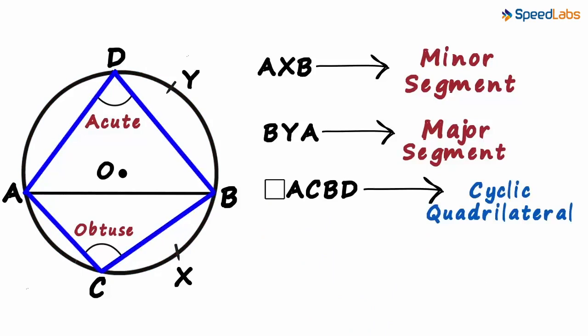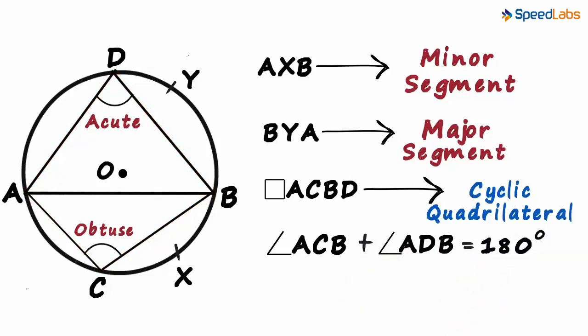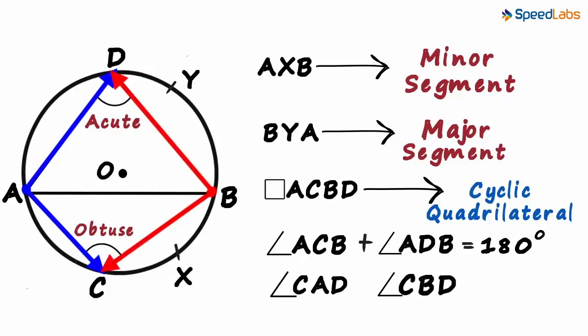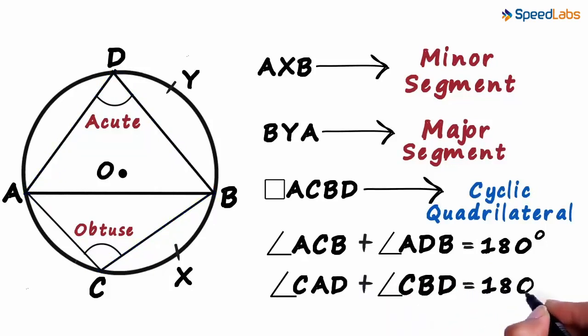And these quadrilaterals have a special property which says that the opposite angles are always supplementary, which means they add up to 180 degrees. Angle ACB and angle ADB are opposite angles, so they add up to 180 degrees. Similarly, angle CAD and angle CBD are also opposite angles of this cyclic quadrilateral, and they add up to 180 degrees as well.